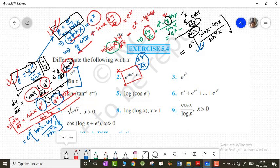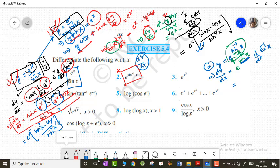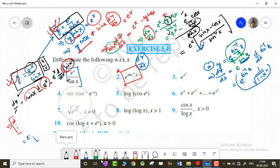Question number two: y equals e to the power sin inverse x. Direct differentiation using chain rule. The differentiation of e to the power something is e to the power something times the differentiation of that something. So dy/dx equals e to the power sin inverse x times 1 over root (1 minus x squared).